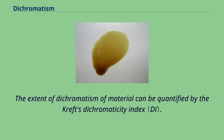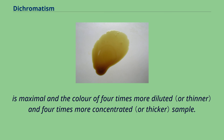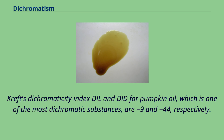The extent of dichromatism of a material can be quantified by Kreft's dichromaticity index. It is defined as the difference in hue angle between the color of the sample at the dilution where the chroma is maximal and the color of a four times more diluted and four times more concentrated sample. The two hue angle differences are called the dichromaticity index towards lighter and dichromaticity index towards darker, respectively. For pumpkin oil, one of the most dichromatic substances, Kreft's dichromaticity index D_IL and D_ID are minus 9 and minus 44, respectively.